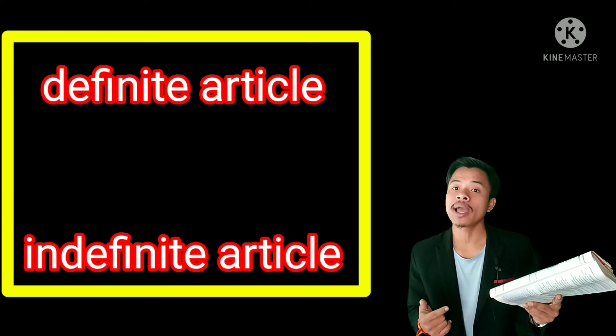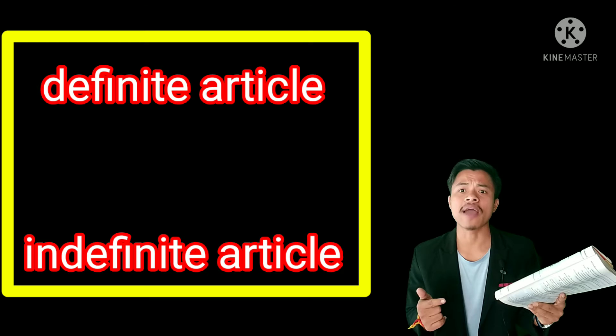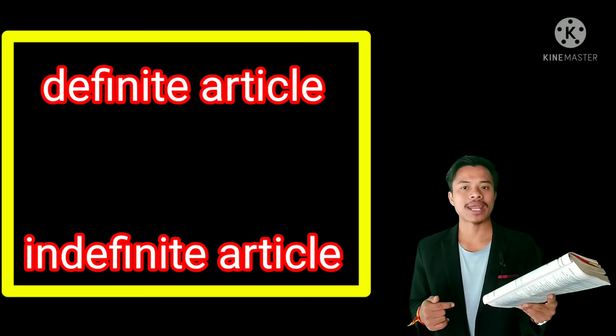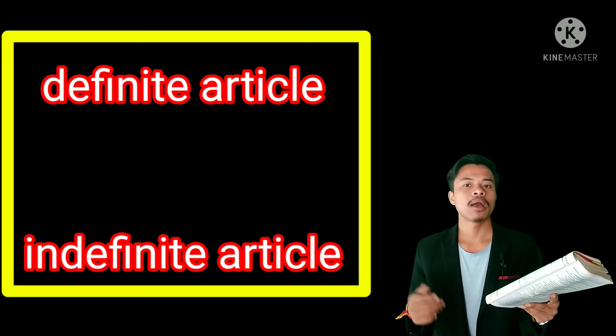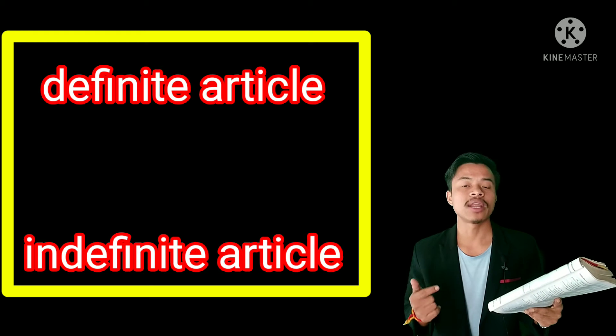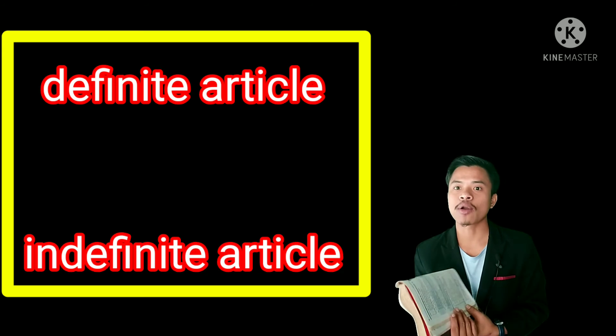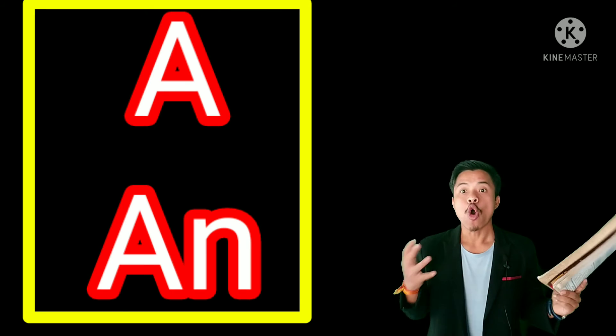A or an is called indefinite articles. A or an ko hum kya bolenge — indefinite articles. So, the words 'a' and 'an' are called indefinite articles.